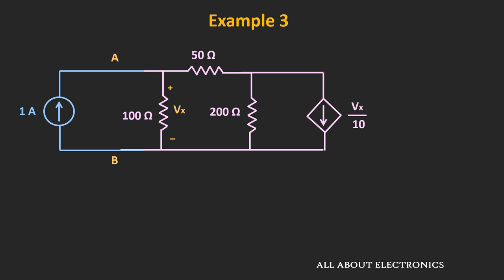For this circuit, let's apply a test current of 1A. We can choose any value, but choosing 1A simplifies calculation — we just read off the resulting voltage directly as the equivalent resistance in ohms. To find the voltage across this 1A current source, we need the voltage across the 100Ω resistor, which is directly in parallel with the current source. Let node voltages be Vx and Vy. Applying KCL at node X: 1A = Vx/100Ω + (Vx − Vy)/50Ω, which simplifies to 3Vx − 2Vy = 100. This is the first expression.